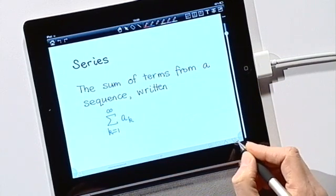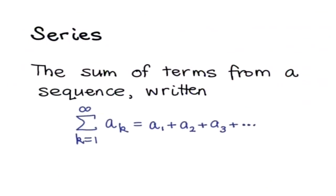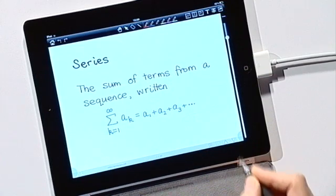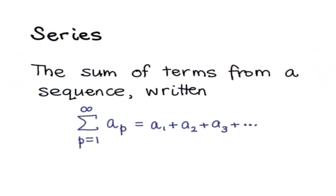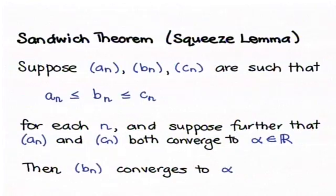A series is the sum of terms from a sequence. We might also write this series more informally as a1 plus a2 plus a3, and so on. The variable name used to index the series doesn't matter — we could call it k or p or anything else; it doesn't change the series. In this video we're going to be asking what it means to sum infinitely many numbers.